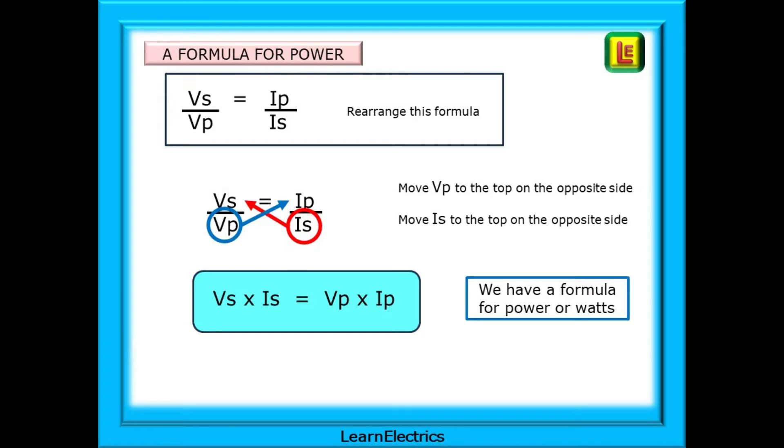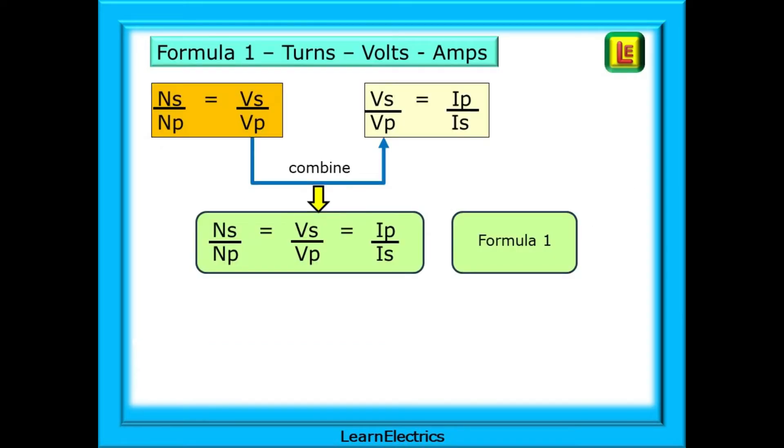Let's put all these formulas for turns, volts and amps together into some kind of order. We have NS over NP equals VS over VP. And we have VS over VP equals IP over IS. So we could combine these into one long formula as shown which we've called formula number one.